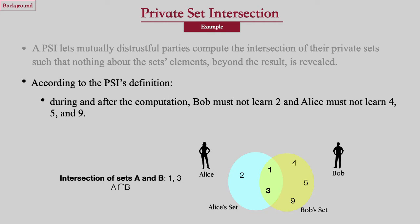Let's look at an example in which Alice has a set containing 1, 2, 3, and Bob has a set containing 1, 3, 4, 5, and 9. According to the PSI's definition, Alice must not be able to learn Bob's set elements that are not in the intersection. So she must not be able to learn 4, 5, and 9. Also, Bob must not be able to learn 2.